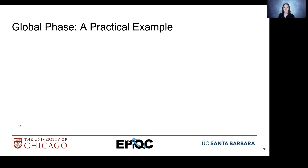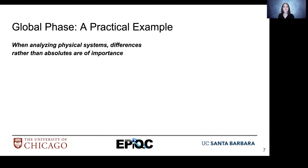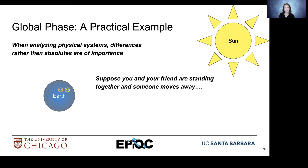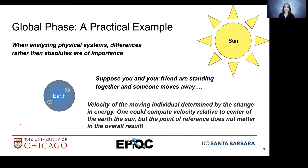Let's look at global phase in a little more depth with a practical example. When we look at physical systems, we're often more concerned with differences rather than absolutes. Pretend you and your friend are standing together and one of them moves away. When calculating the velocity at which the friend moves away, you could use the center of the earth or the center of the sun as your reference point — the point of reference really doesn't matter. What really matters is the difference. That's why global phase is something we tend to discard in quantum computing.